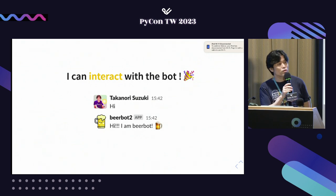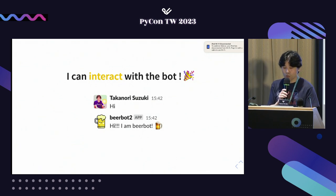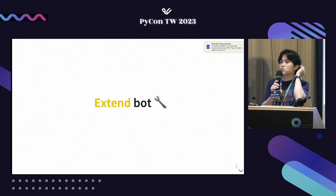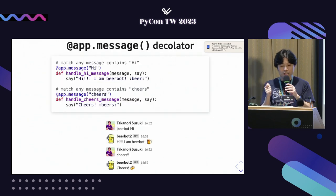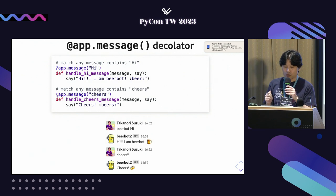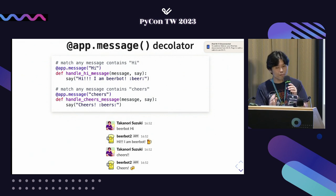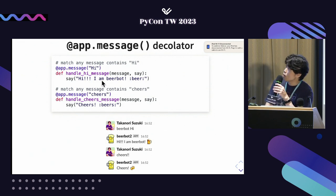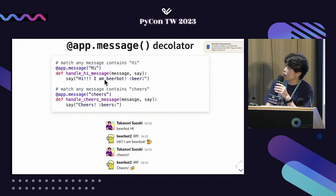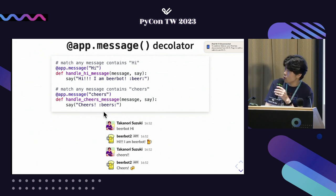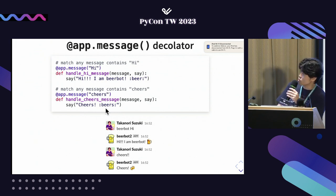But this is simple, so let's extend the bot. The app.message decorator executes the function when it matches the pattern. The first pattern is 'hi' and the second is 'cheers'. When I say 'hi', BeerBot responds 'Hi, I am BeerBot'. When I say 'cheers', BeerBot sends cheers with a beer emoji.